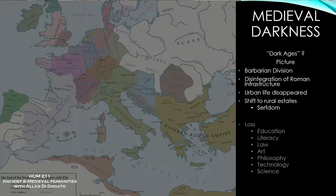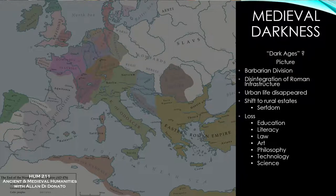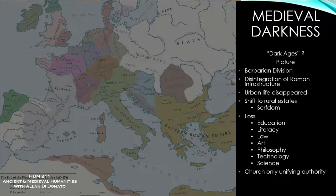There was a loss of many things: education, literacy, law, art, philosophy, technology, science. There was no centralized state authority, with the exception of perhaps the church in the West, which provided some sense of unity for Europe and linked most Christian territories to Rome. What remained of Roman governmental structure existed within this evolving church, and what remained of classical scholarship and literature was tucked away in the monasteries of the West.